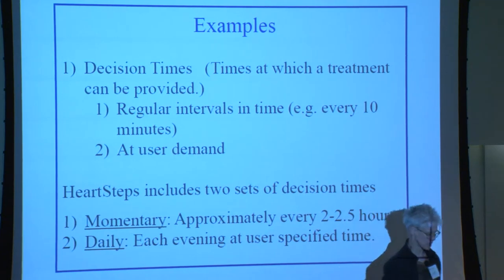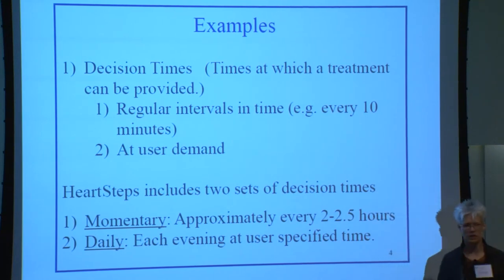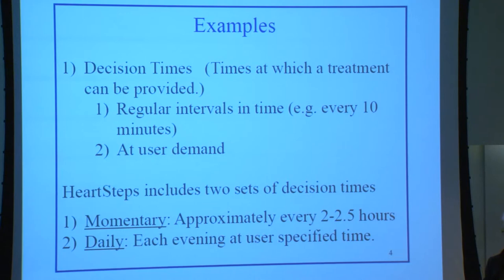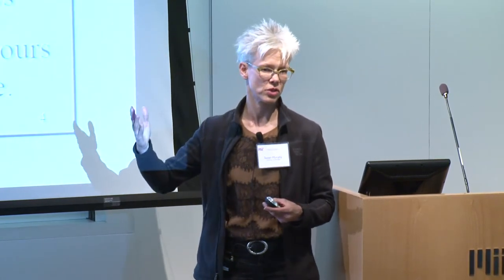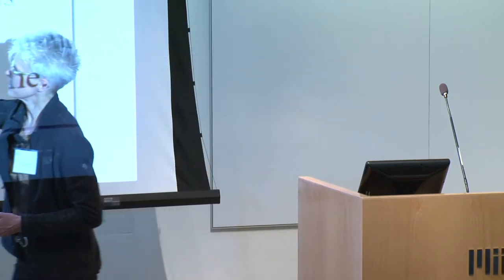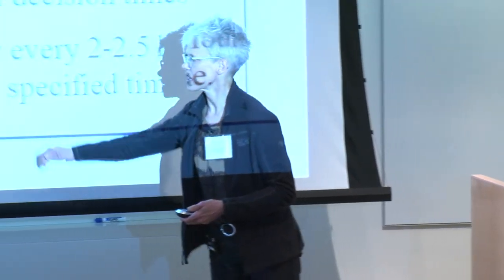HeartSteps is an intervention to help sedentary people become less sedentary and increase activity. It has two types of decision times. One is momentary — approximately every two to two-and-a-half hours. The intervals were determined by analyzing Jawbone data: sedentary people tend to be active before work, around midday, mid-afternoon, end of work, and in the evening — so about five times a day. There's also a daily decision time every evening.